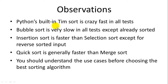Some observations to wrap up: Python's built-in TIM sort is insanely fast for every test and outperformed every sorting algorithm I wrote by a long shot. Bubble sort is very slow in all tests except already sorted data, where it simply notices the order and exits. Insertion sort is faster than selection sort in every test except reverse sorted input. Quick sort is generally faster than merge sort for nearly every test. Most importantly, understand the use cases of your users before choosing the best sorting algorithm — under different circumstances, different algorithms may perform faster or slower. There is no single magic bullet, except maybe TIM sort. Thanks for watching.